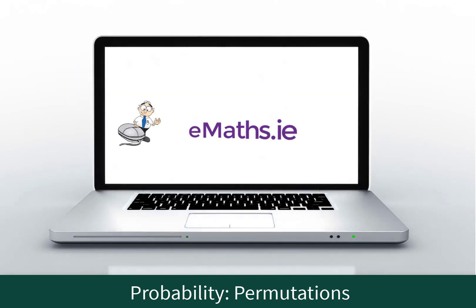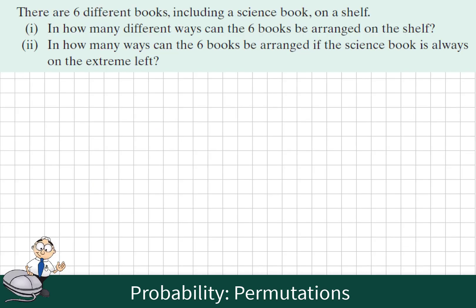Probability, permutations. This is a Leaving Cert higher level maths question. In part one we want to know how many different ways could we arrange six books on a shelf.